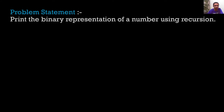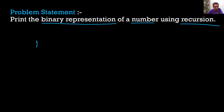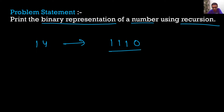Let's move on to the next problem. The problem statement says to print the binary representation of a number using recursion. So if we have a number 14, we simply have to convert this 14 into its binary form and print that binary representation. So 14 in binary is 1110. The important part is that we have to perform this conversion of decimal to binary using recursion.